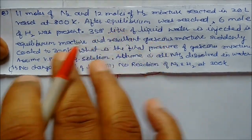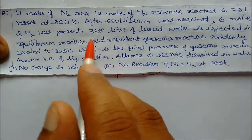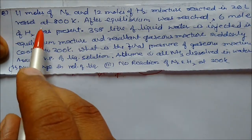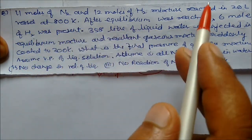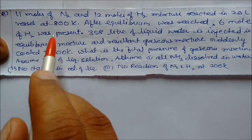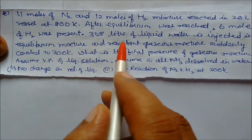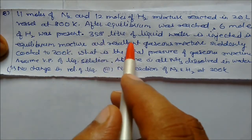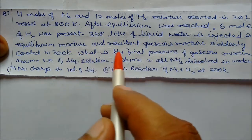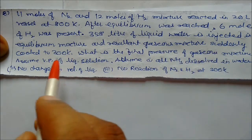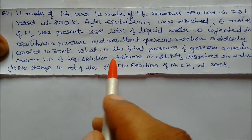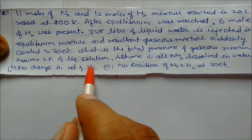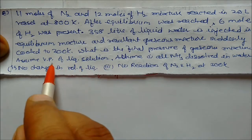Second question: 11 moles of nitrogen and 12 moles of hydrogen mixture react in a 20-liter vessel at 800 Kelvin. After equilibrium is reached, 6 moles of hydrogen were present, and 3.5 liters of liquid water is injected into the equilibrium mixture. The remaining gas mixture is suddenly cooled to 300 Kelvin. What is the final pressure of the gas mixture?